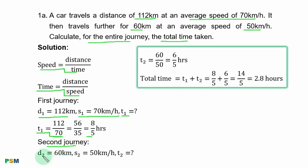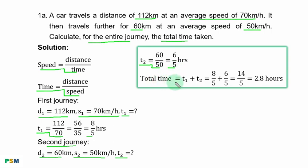The time becomes 112 divided by 70, and this fraction reduces to 8 over 5 hours. Second journey: distance is 60 kilometers, speed is 50 kilometers per hour. Time for the second journey becomes 60 over 50, which is 6 over 5 hours. Total time is 8 over 5 plus 6 over 5. Since they are like fractions, when you add you get 14 over 5, equal to 2.8 hours.